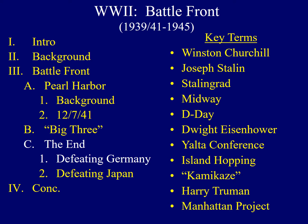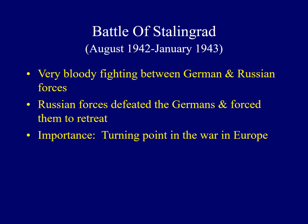Now that the different strategies have been discussed, the lecture will explore the steps that led to the end of the war — first with Germany. Some of the bloodiest fighting in the Second World War took place in Stalingrad from August 1942 to January 1943. During those four months, the Soviet Union saw more deaths than the United States did during the entire war. In the end, Russian forces defeated the Germans and forced them to retreat. This was a turning point in the fighting in Europe.